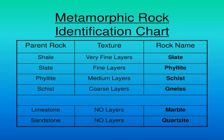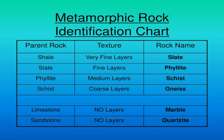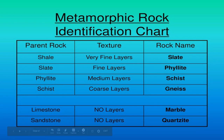Limestone is a chemical sedimentary rock, and because it doesn't form parallel layers of mineral grains, it becomes a non-foliated metamorphic rock — and that's where we get marble. Sandstone is a clastic sedimentary rock, and that becomes a non-foliated metamorphic rock called quartzite.